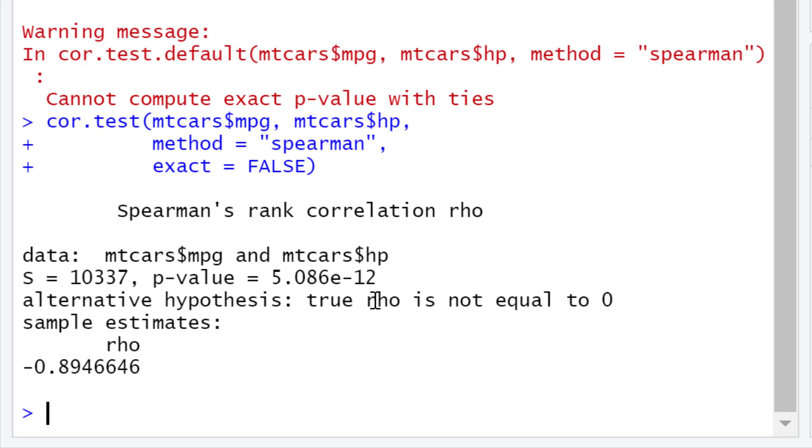Let's interpret these results. You'll firstly see that the Spearman rank correlation coefficient value is negative 0.89. The Spearman correlation coefficient value is a value that ranges from negative 1 to plus 1. Negative 1 is a perfectly negative association between the two variables. A value of 0 indicates no association between the two variables. And a value of positive 1